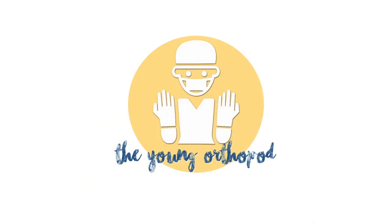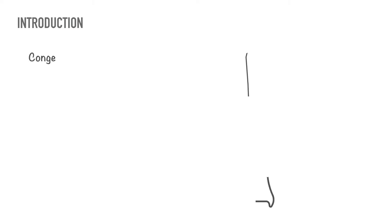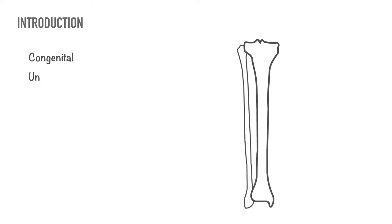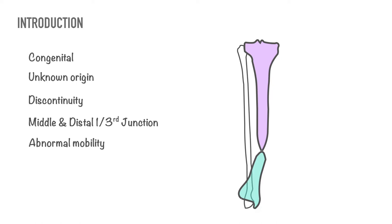Hello and welcome to the Young Orthopod. Today we will discuss congenital pseudoarthrosis of the tibia — a condition of unknown origin in which discontinuity of the bone at the junction of middle and distal third is present at birth or develops thereafter during the growth period, leading to abnormal mobility and creating an illusion of a false joint.